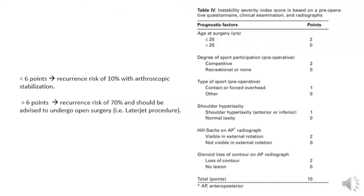Due to increased failure rates of arthroscopic Bankart repair, the Instability Severity Index Score (ISIS) was proposed. It identifies six risk factors: age under 20 at stabilization, competitive sport participation, contact or overhead sports, shoulder hyperlaxity, Hill-Sachs lesion visible on AP X-ray, and glenoid loss of contour on AP X-ray. A score above 6 points carries 70% recurrence risk, indicating open Latarjet, while a score of 6 or below carries only 10% recurrence risk, and arthroscopic Bankart repair is advised.